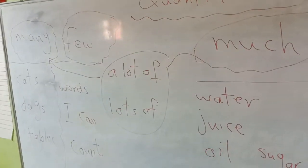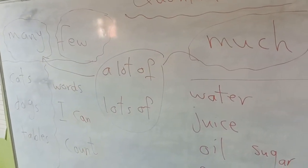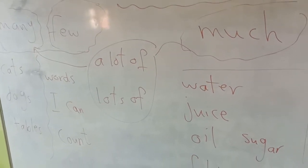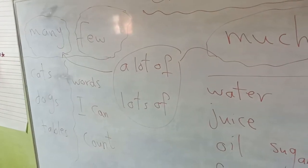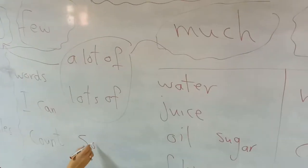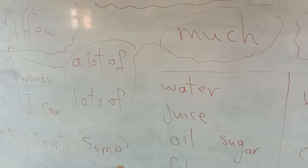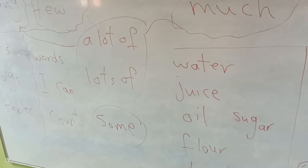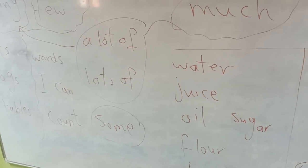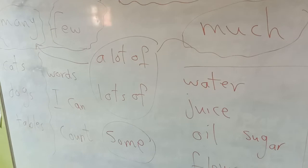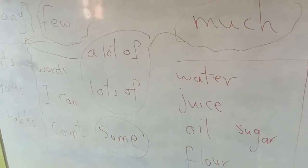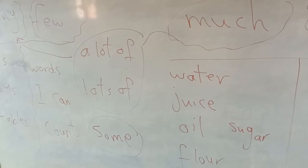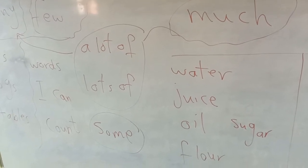A lot of and lots of can come with both countable and uncountable words. Another word like this is some — some also comes with countable and uncountable words. I say some cats and some water. I say some dogs and some juice. So a lot of, lots of, and some can all be followed by countable and uncountable words.